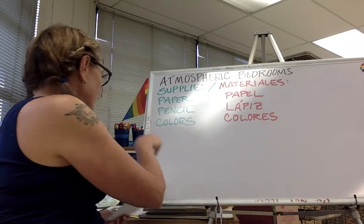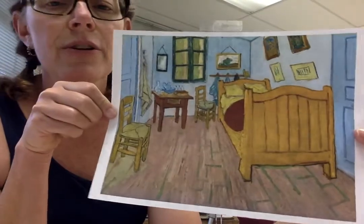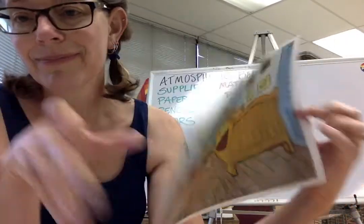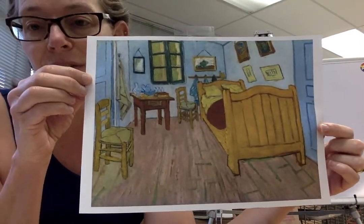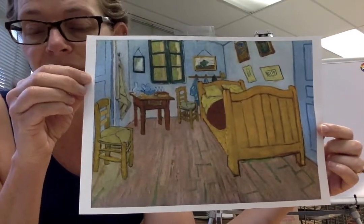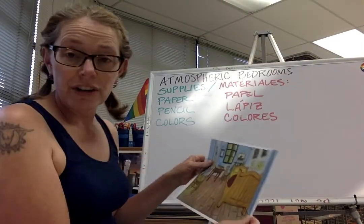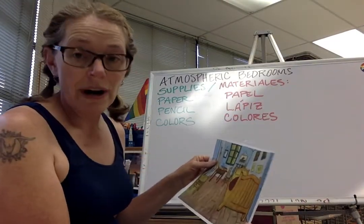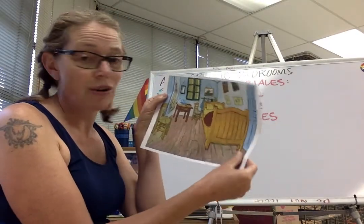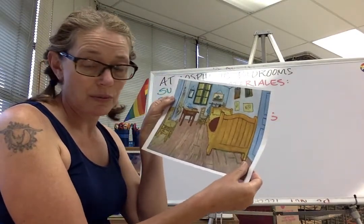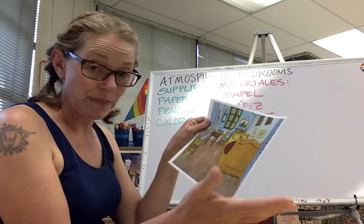So I've got here Van Gogh's painting of his bedroom, at one of the places that he lived. We're going to figure out how to do an atmospheric drawing based on this painting. And then you're going to use your actual bedroom for your painting. This is just going to be my demonstration — you don't have to copy this one. You're going to do your bedroom. Think about what's in your house, in your room.